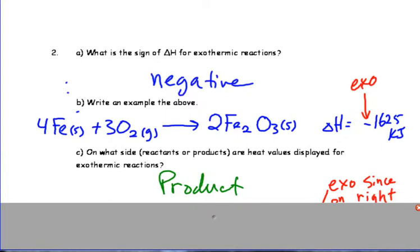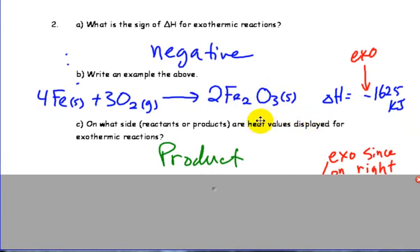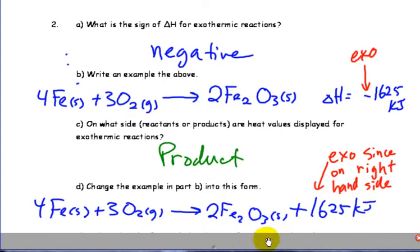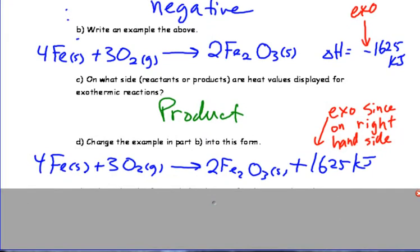If we were to write that in the equation, since heat is being released, is produced, it would be on the product side. So we wouldn't need to have the negative in there because since it's on the product side, that means it's produced, therefore it's exothermic.